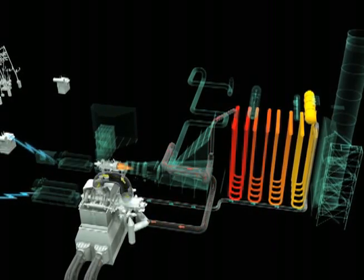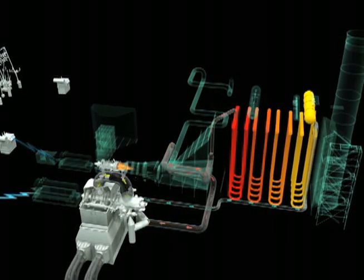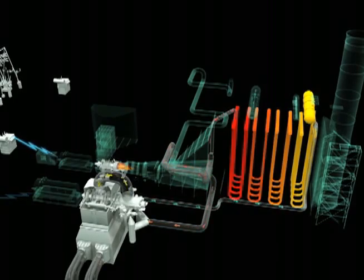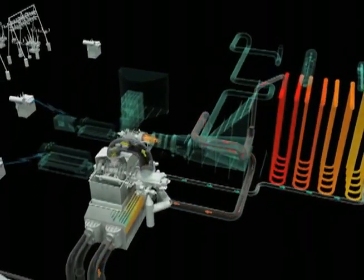The residual steam is further cooled into water and recirculated through the heat recovery steam generator where the process begins again.